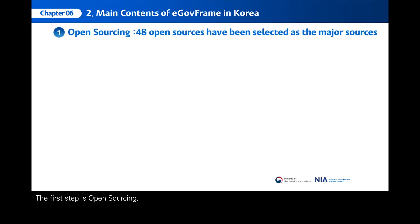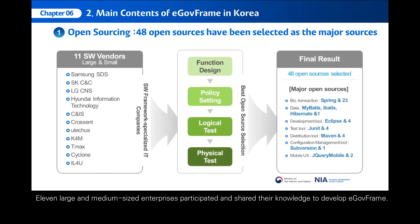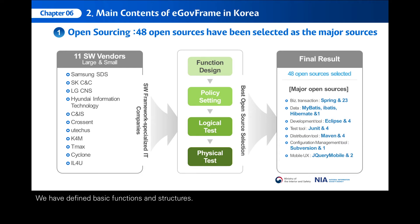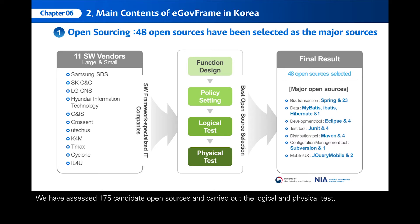The first step is open sourcing. Eleven large and medium-sized enterprises participated and shared their knowledge to develop E-GovFrame. We have defined basic functions and structures. It has gone through the process of defining an open source selection policy. We have assessed 175 candidate open sources and carried out the logical and physical test. Finally, 48 open sources have been selected as the major open sources.